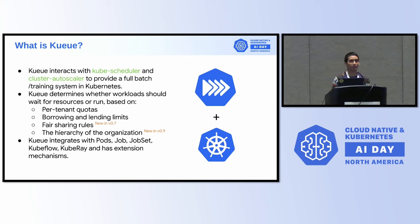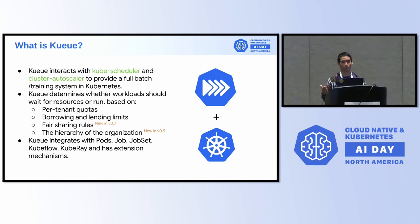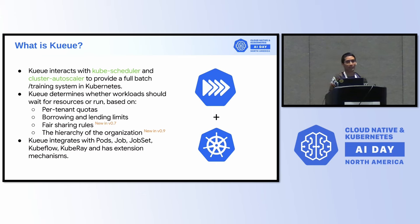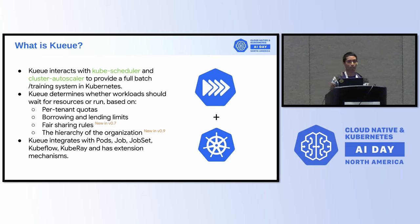Kueue integrates with a number of APIs from the ecosystem, starting from pods and jobs — which are Kubernetes objects — but also from other sub-projects of Kubernetes like JobSet, or external projects like Kubeflow. And if in your organization you have your own APIs, you can also use Kueue's libraries to integrate with this.